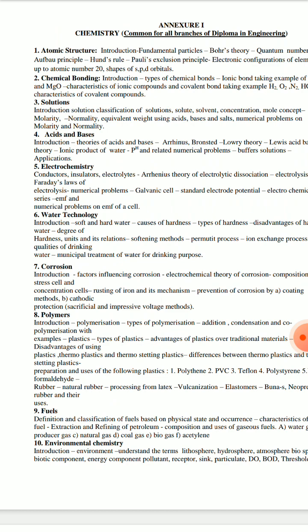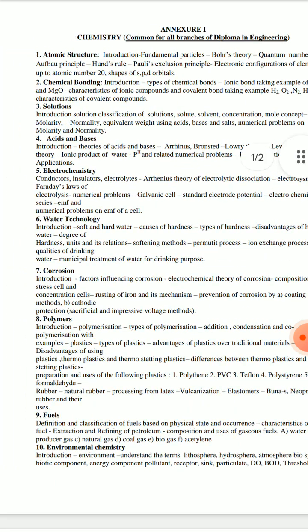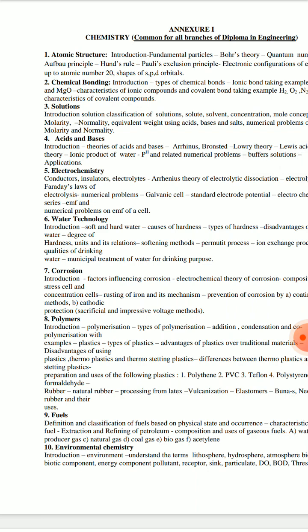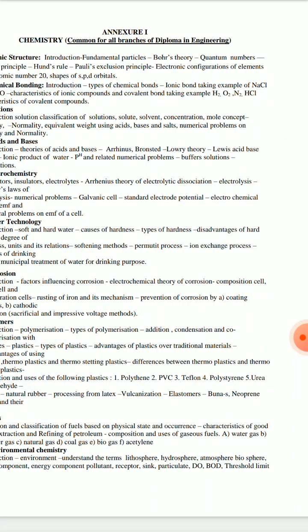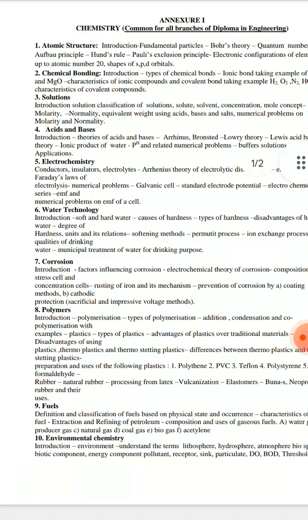Chemical bonding covers types of chemical bonds, ionic bonds with examples of NaCl and MgO, characteristics of ionic and covalent compounds, examples of covalent compounds such as H2O, HCl, and N2, and characteristics of covalent compounds. Complete ionic and covalent compound topics are included in chemical bonding.